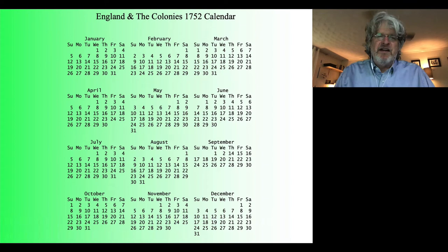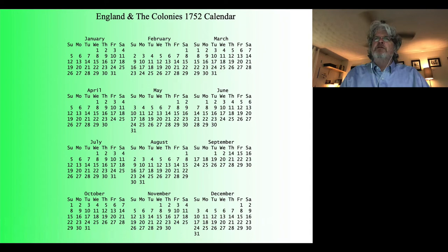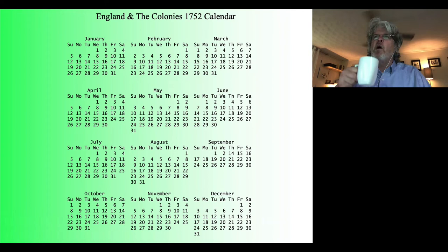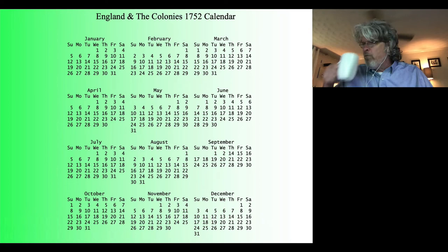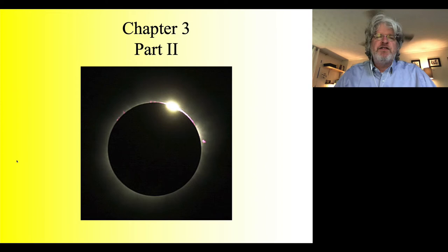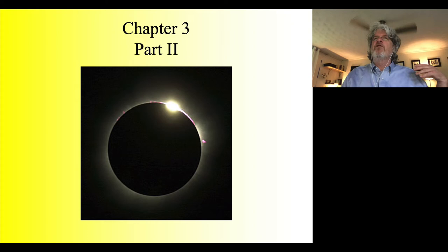Calendar stuff is absolutely fascinating. That brings us to the end of the first part of chapter three, which covered the celestial sphere and motions of the sun. Feel free to take a break and get some coffee. Now we're moving to the second part of chapter three — a new object: the moon and its motions.